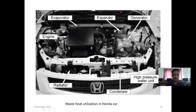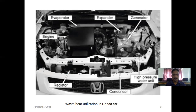You can see the cabin sector here. This is the engine and the evaporator — which can also be called a boiler — and an expander or turbine, a generator, a high-pressure water unit, a condenser, and of course a radiator. This is the arrangement we have, and I will explain the different kinds of arrangements.